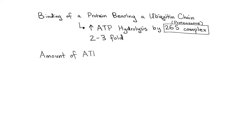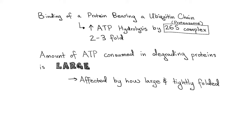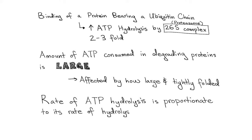The amount of ATP consumed in degrading these ubiquitin-bound proteins is surprisingly large, and is affected by how large and tightly folded the protein is. The rate of ATP hydrolysis of the proteasome is proportional to its rate of hydrolysis of ubiquitylated proteins.